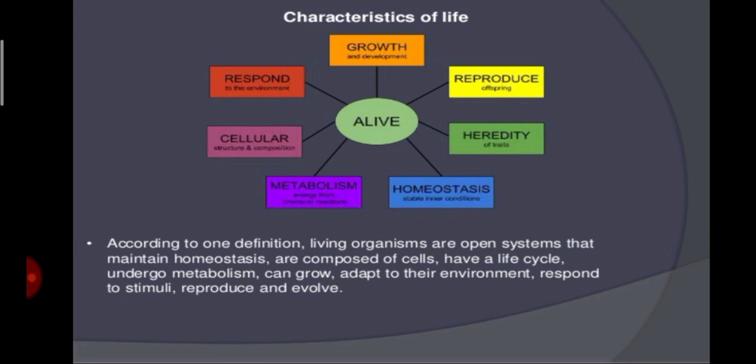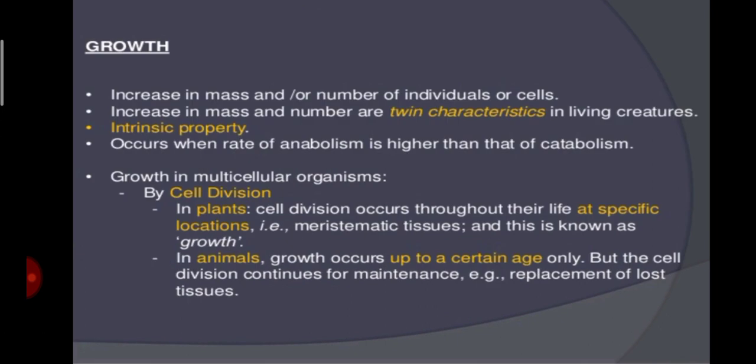Living organisms adapt to their environment, respond to stimuli, reproduce, and evolve. Regarding growth specifically: living things grow with increase in mass and increase in number of individuals or cells. In multicellular organisms, growth occurs continuously in plants throughout their life span, whereas in animals it occurs only up to a certain age.